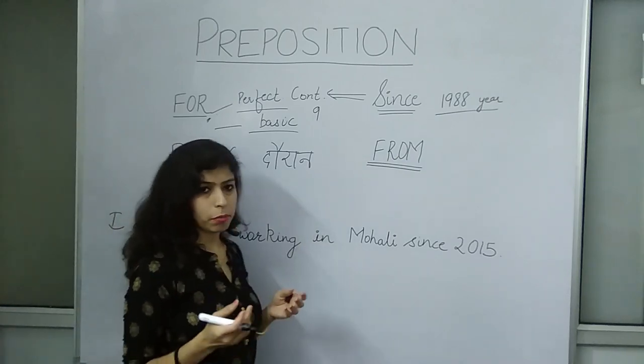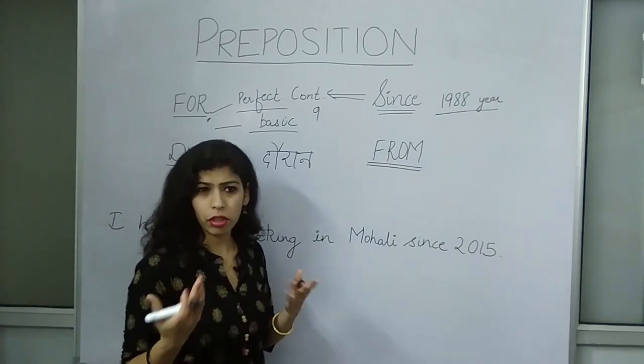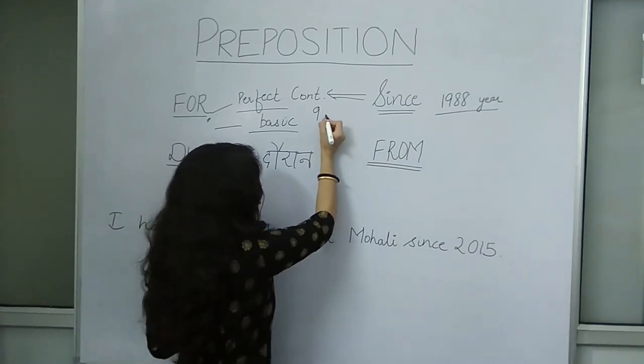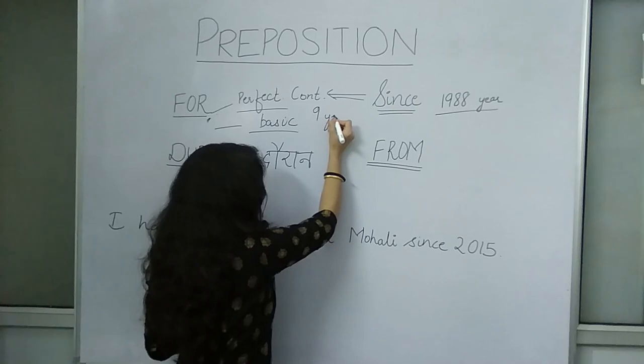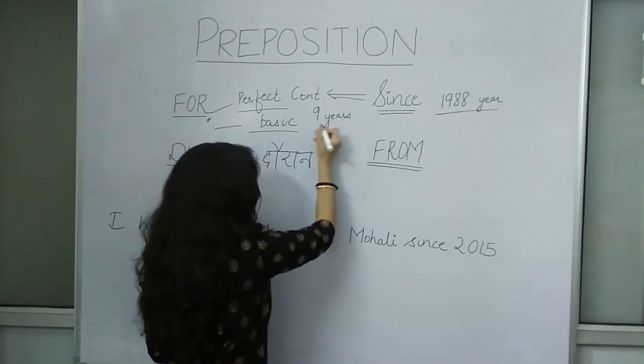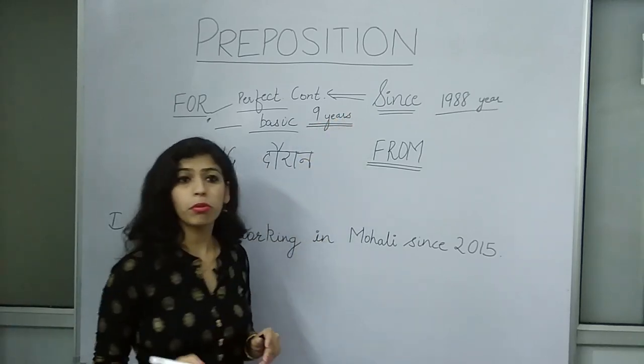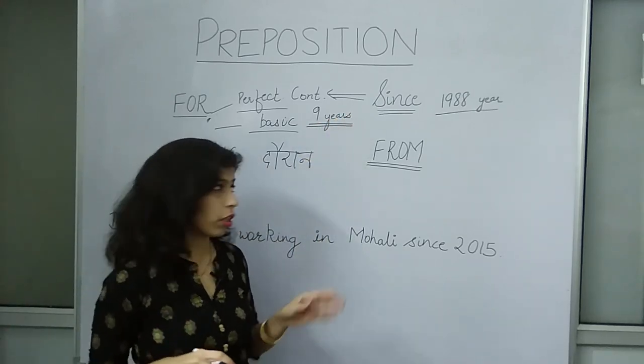But when I am not sure and I am saying '8 years' or '9 years,' that is a number, not a specific point. So when I am telling a number of years, I will use 'for.' For example: 'I have been living here for 9 years.' Now you have to know how to use 'since 1988' versus 'for 9 years.'